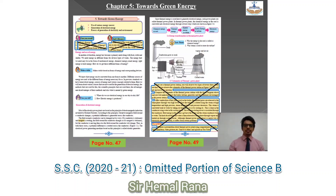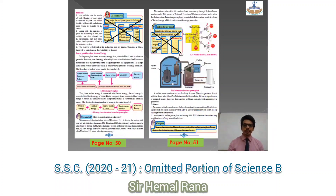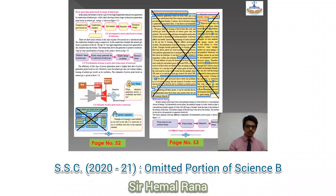In Chapter 5, 'Can You Recall' and 'Let's Discuss' have been removed completely. On page 48, the entire thermal power plant part has been removed completely. On page number 50, 'Do You Know' has been removed, and on page 51, 'Internet My Friend' has been removed. On page 52, a particular part has been removed, and on page 53 more than half the page has been removed — you directly start from hydroelectric energy.